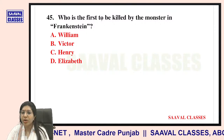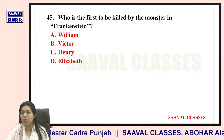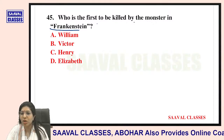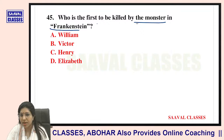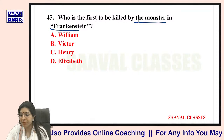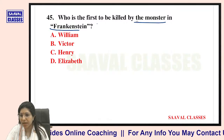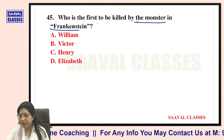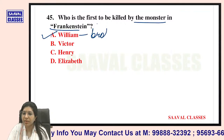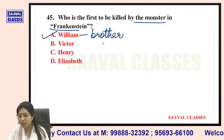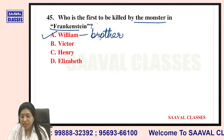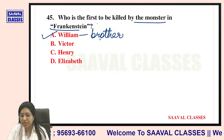Question number forty-five: Who is the first to be killed by the monster in Frankenstein? The answer is William — Victor's brother. The monster kills him, and then the blame is placed on the girl who was raised in their household.